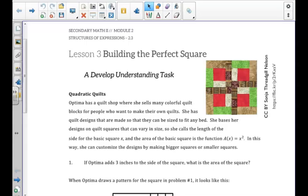We are introduced to Optima in this lesson. She has a quilt shop where she designs quilt blocks. She bases her designs on quilt squares where she calls the length of a basic square x and the area of a square x².